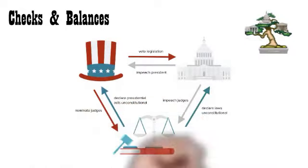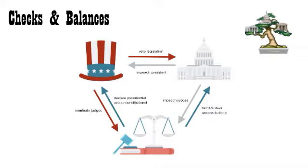Checks and balances, as introduced by Montesquieu, is the idea that there should be power that checks the other powers of our government. Basically, each branch of our government has a check or control over the other branches. That way, they all need to work together, and they need to work together fairly.